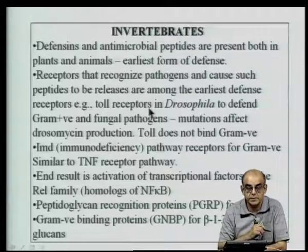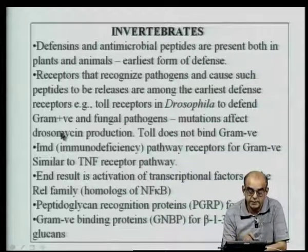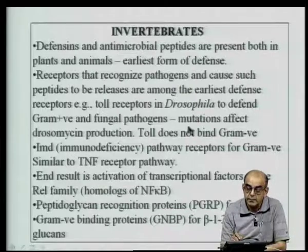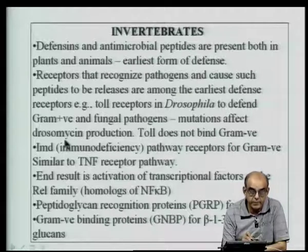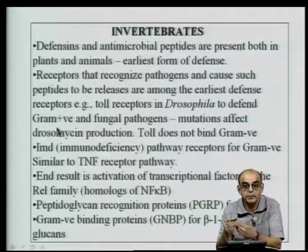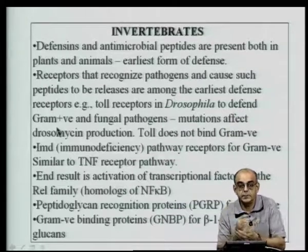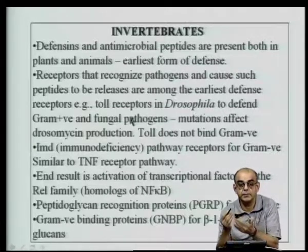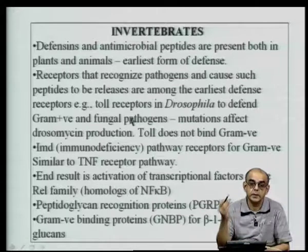Mutations in Toll receptors were found to affect the production of an antimicrobial peptide called drosomycin into the hemolymph of insects. This established a connection: because antimicrobial peptides are inhibited when the Toll receptor is mutated, it became clear that Toll receptors have a function apart from embryogenesis and play a role in microbial defense even in invertebrates.